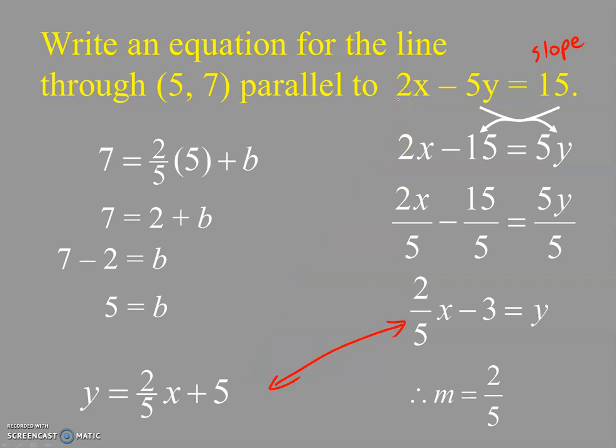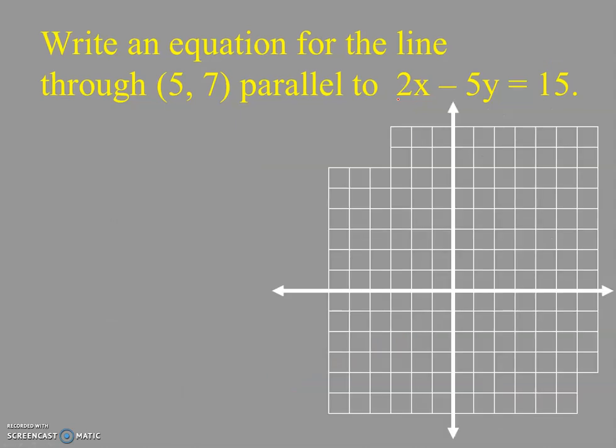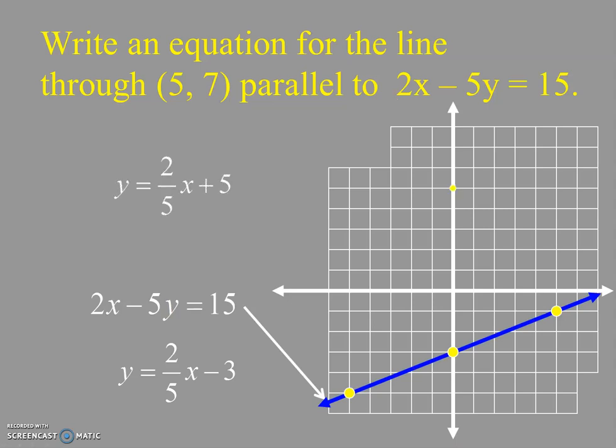Yes, the only thing different is their y-intercepts. So let's take a look at a picture of these two. Here's my line 2x minus 5y equals 15, and then the line I was looking for, passing through (5, 7) which is up here, and so that's the line that's passing through that is parallel. As I said, the only thing that changes between these two equations is that y-intercept.